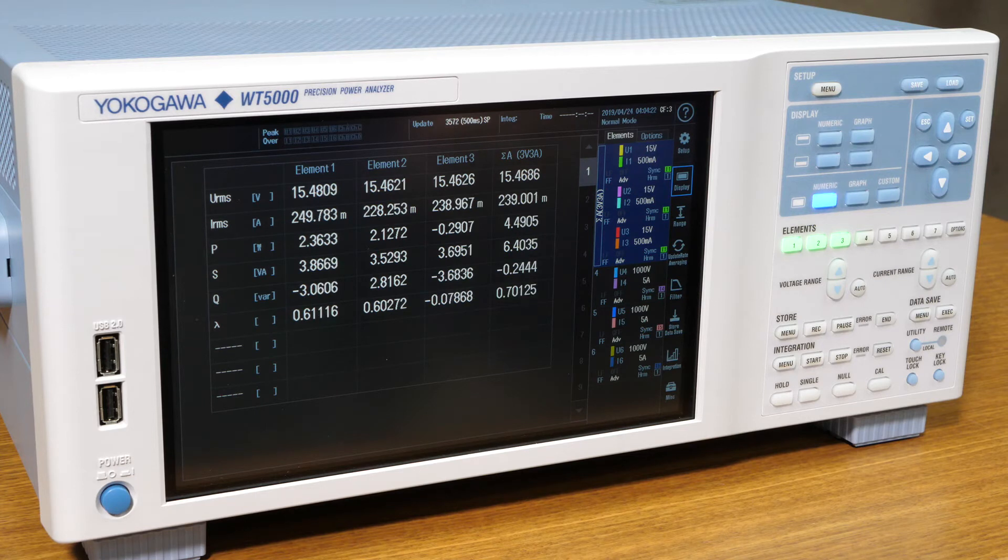To get the correct individual measurements, we will use the delta computation functions that will perform the appropriate calculations and give us the correct individual powers.